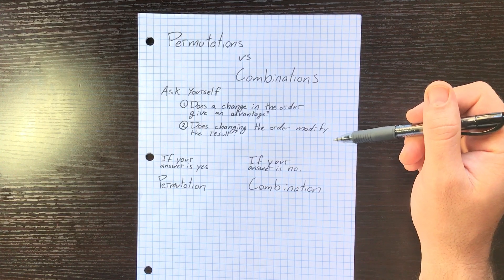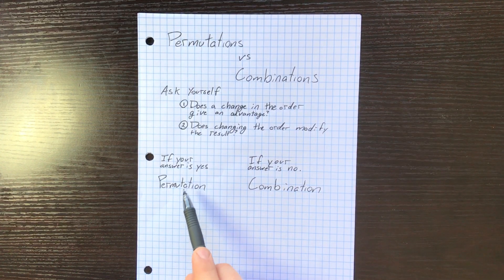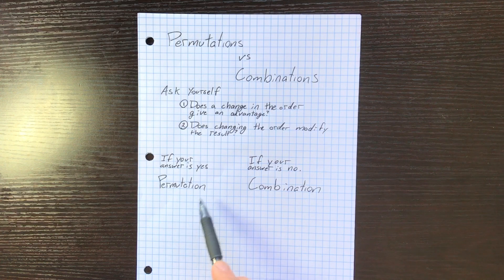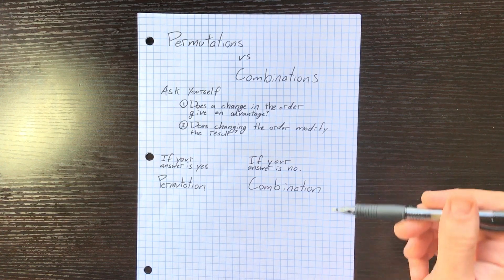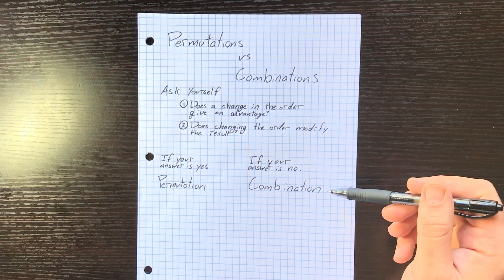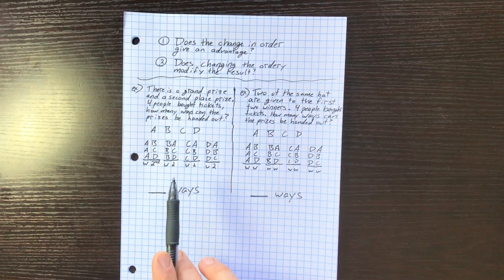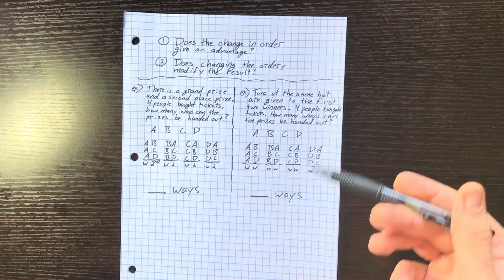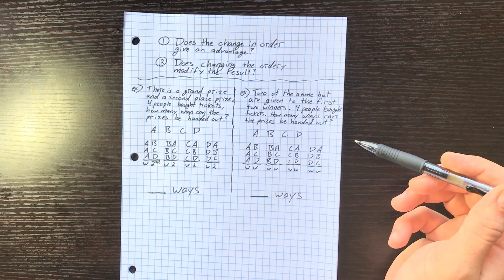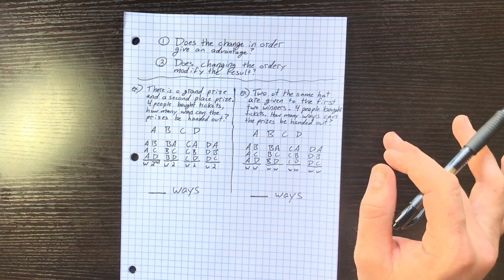You have to ask yourself these two questions: Does a change in the order give an advantage, or does changing the order modify the result? If your answer is yes for these questions, you're dealing with a permutation. But if the answer is no, that's a combination. Keeping in mind that a permutation is when the order is important and a combination is when it's not.